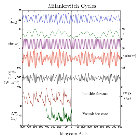As the orientation of Earth's orbit changes, each season will gradually start earlier in the year. Precession means the Earth's non-uniform motion will affect different seasons. Winter, for instance, will be in a different section of the orbit. When the Earth's apsides are aligned with the equinoxes, the length of spring and summer combined will equal that of autumn and winter. When they are aligned with the solstices, the difference in the length of these seasons will be greatest.